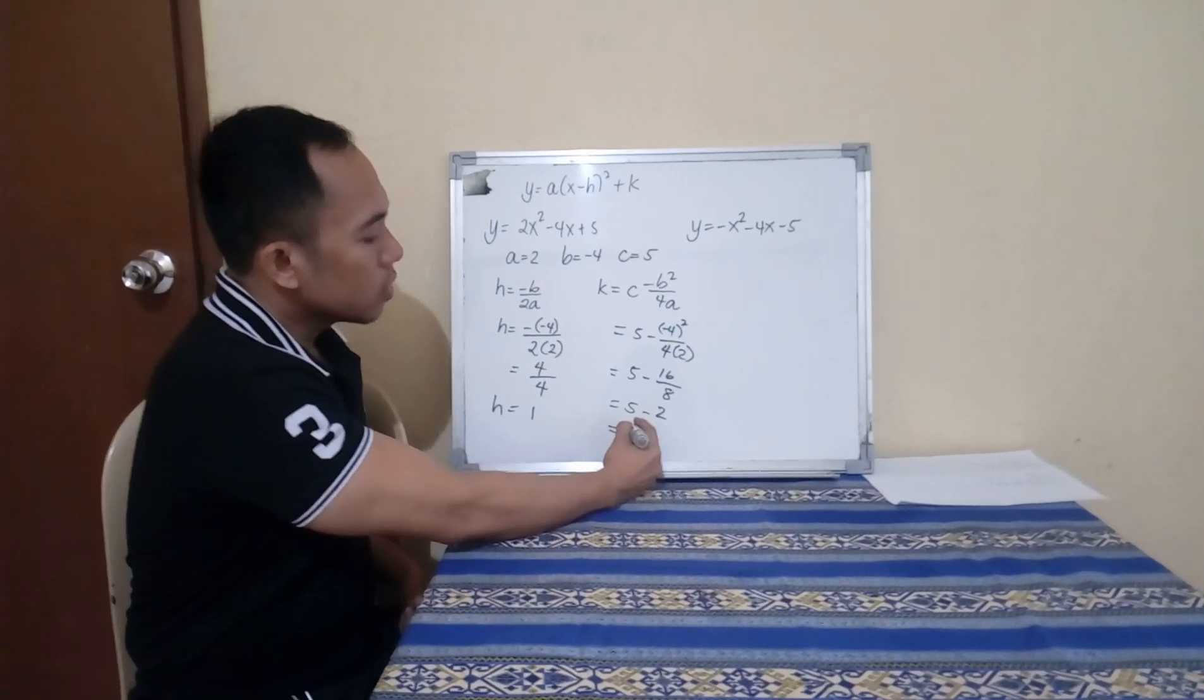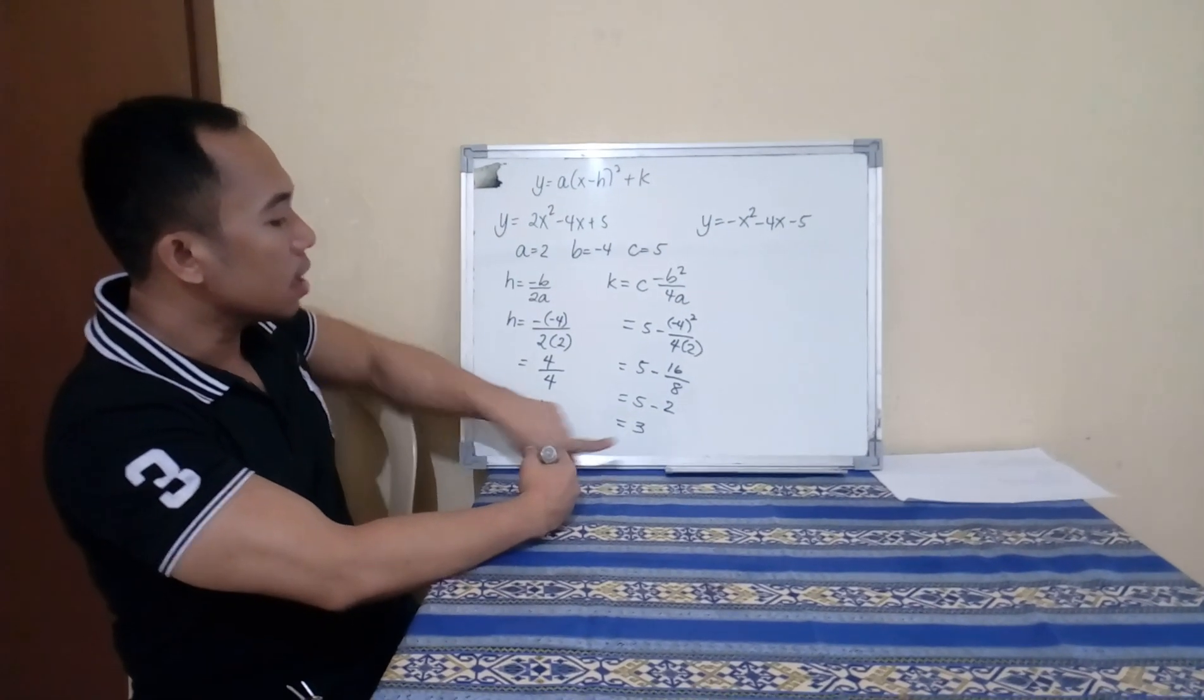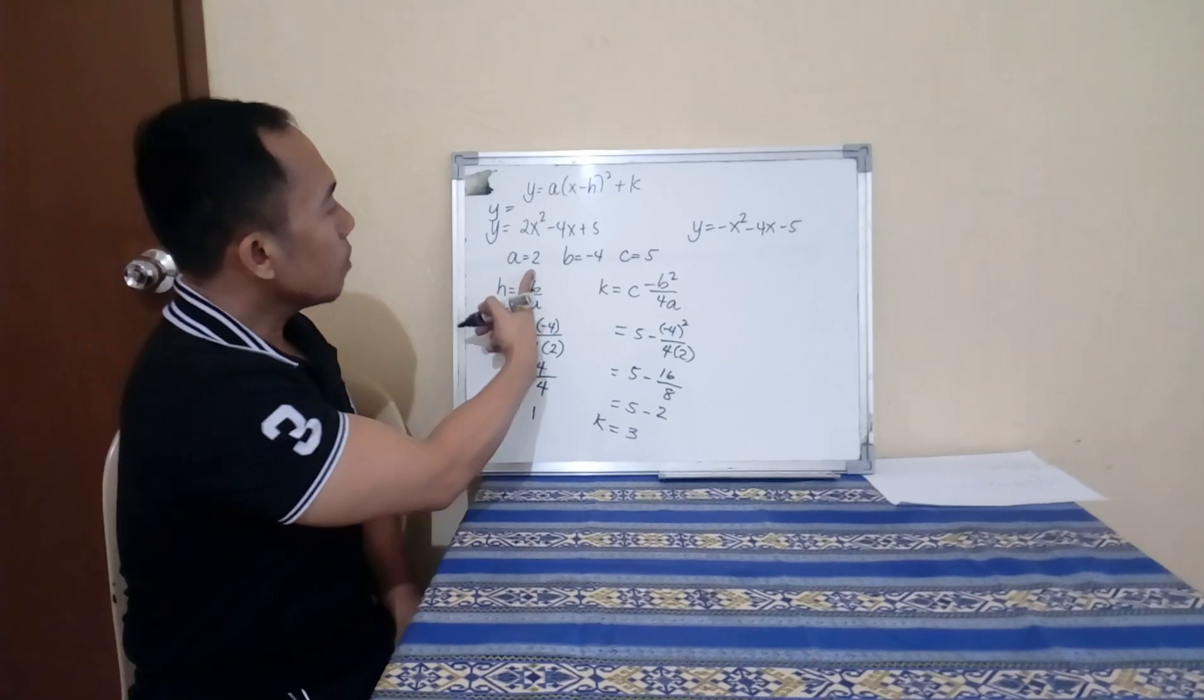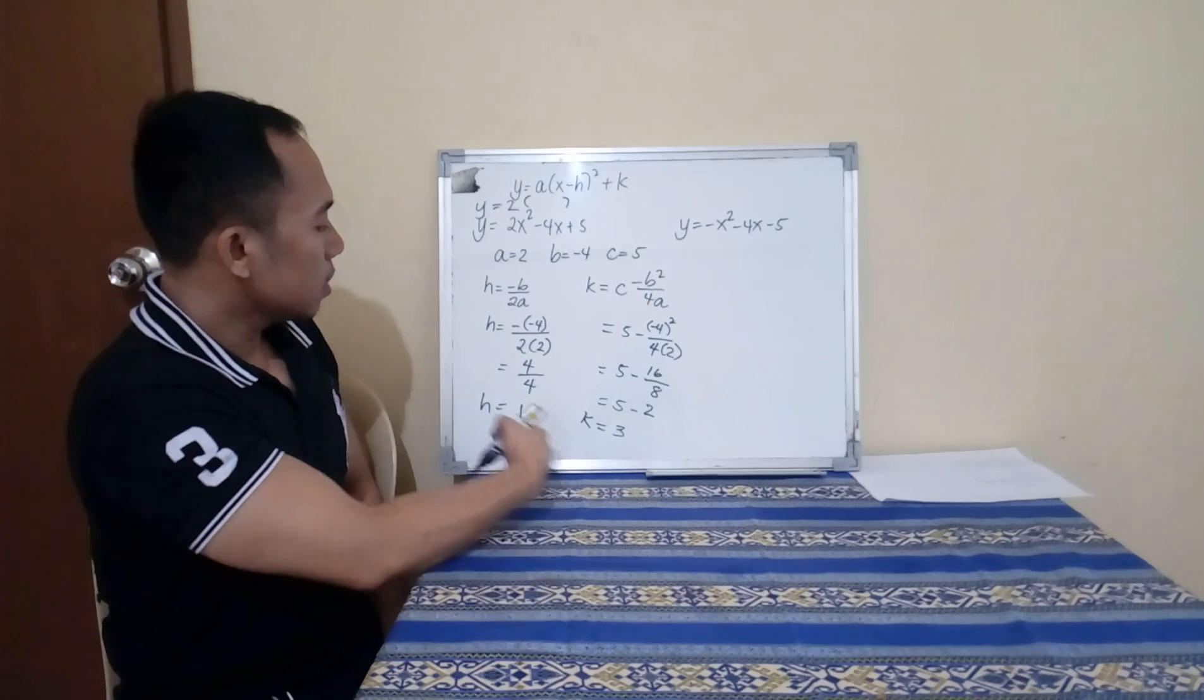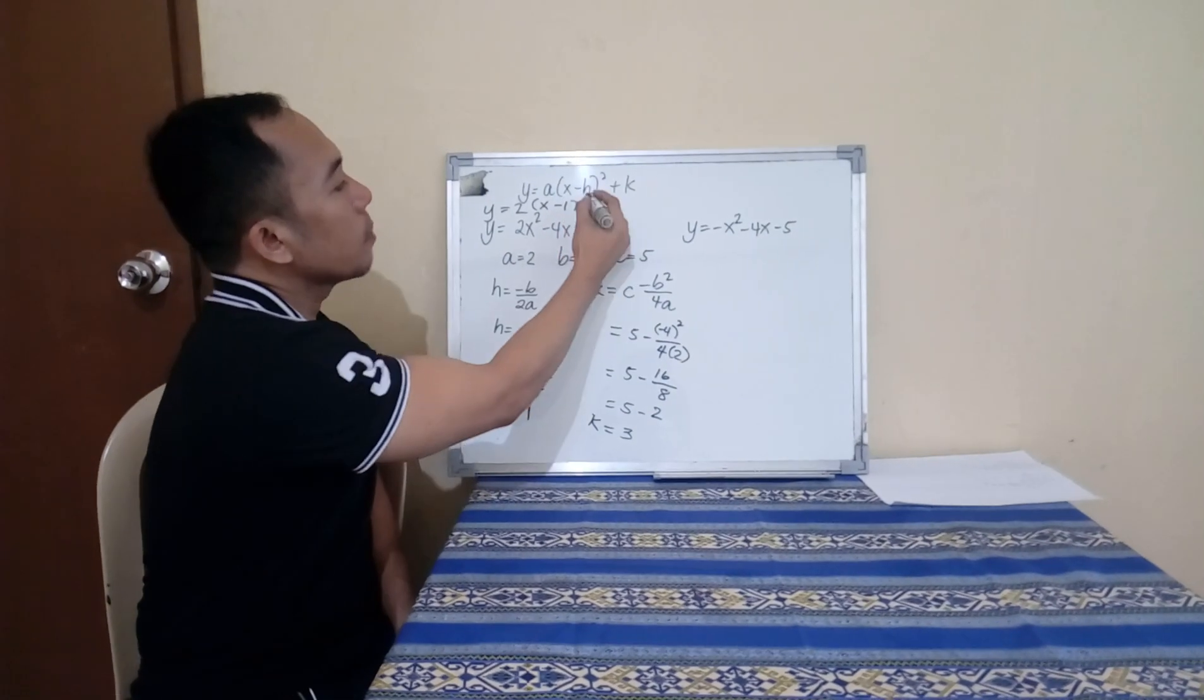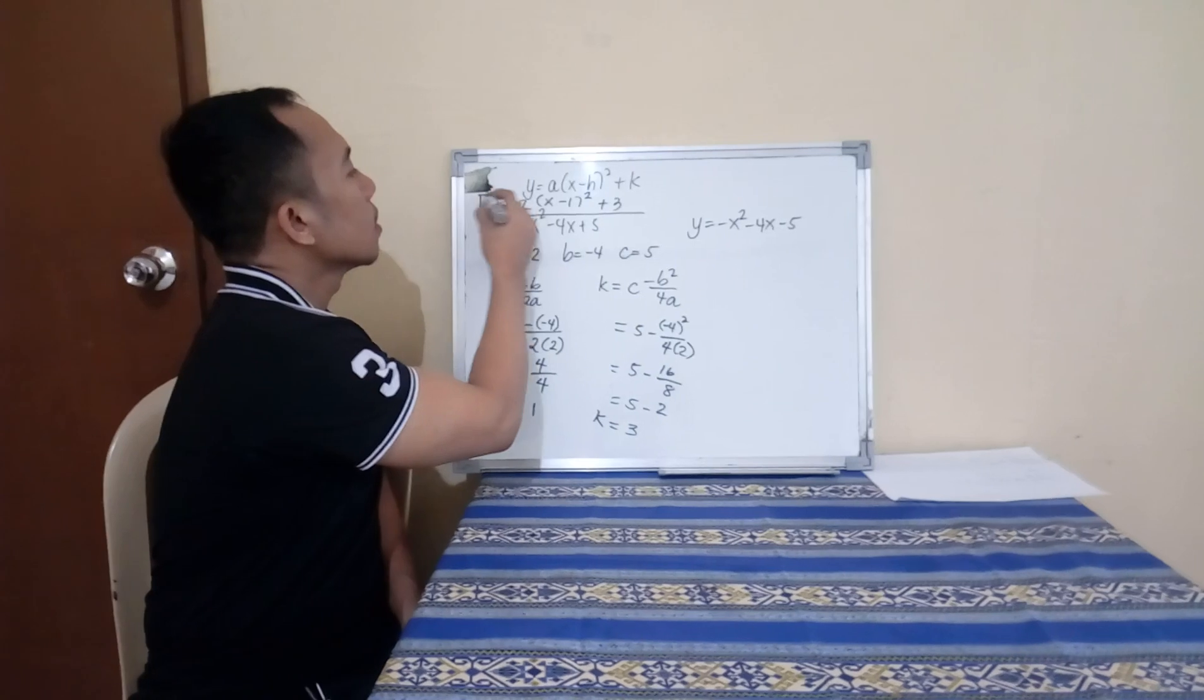the final is 3. Your vertex form for this, you will just substitute letter A, letter H, and letter K. Your vertex form is Y equals A which is 2, quantity X minus H. Copy X, your H is 1, so minus 1, copy squared, then your K is 3, so plus 3. This is now your vertex form.